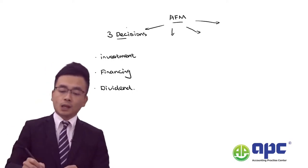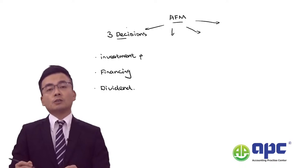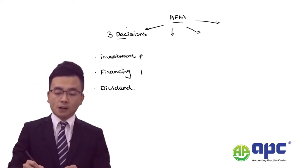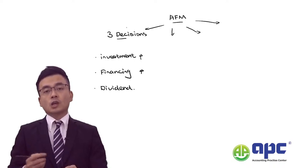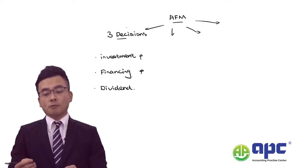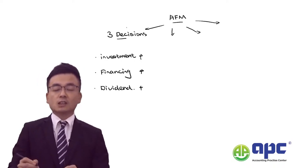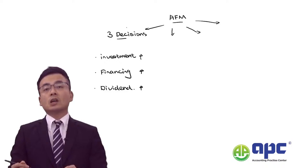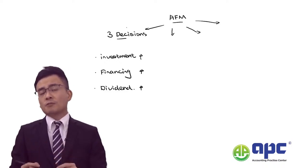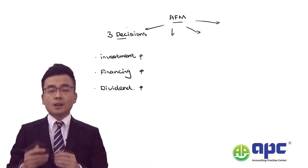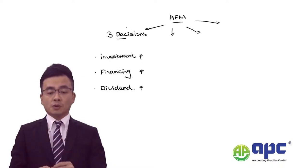An increase in the investment decision will certainly require more finance available to the business. And if we get more finance, we will increase the dividend paid to our investors. It's also very important that you understand that the three decisions are interlinked with each other.